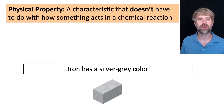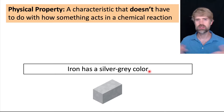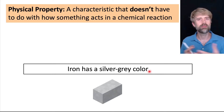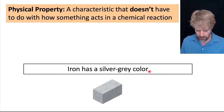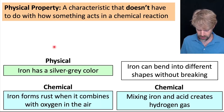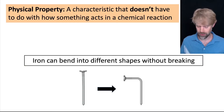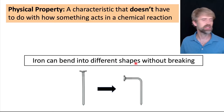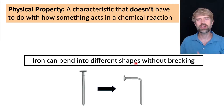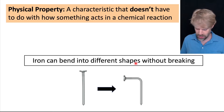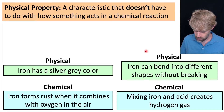The other properties here are physical properties — characteristics that don't have to do with how something acts in a chemical reaction. For example, iron has a silver gray color. There's no chemical reaction here; we're not combining with something or making something new. Color is just color, so silver gray color is definitely a physical property. And iron can bend into different shapes without breaking. When iron bends, it's not a chemical reaction — it's just iron with a different shape. So that is why it's a physical property.